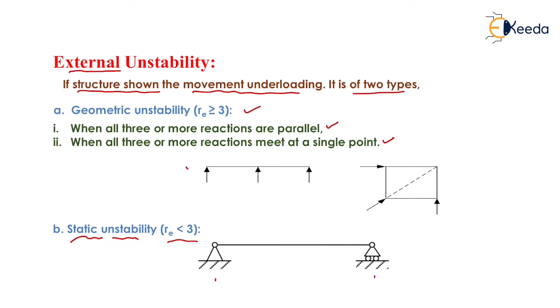In the first diagram, due to three simple supports present in the structure, the reaction is equal to three and all the reactions are parallel — that is why it is a case of geometric instability.